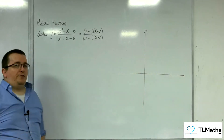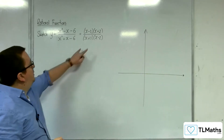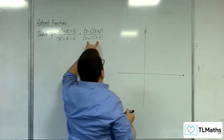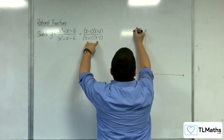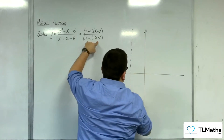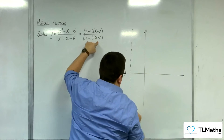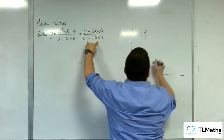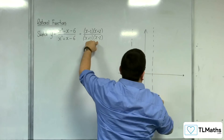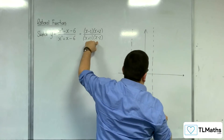On our sketch, we want to identify the vertical asymptotes first. That's when the denominator is 0, so that would be at x equals minus 3 and x equals 2.